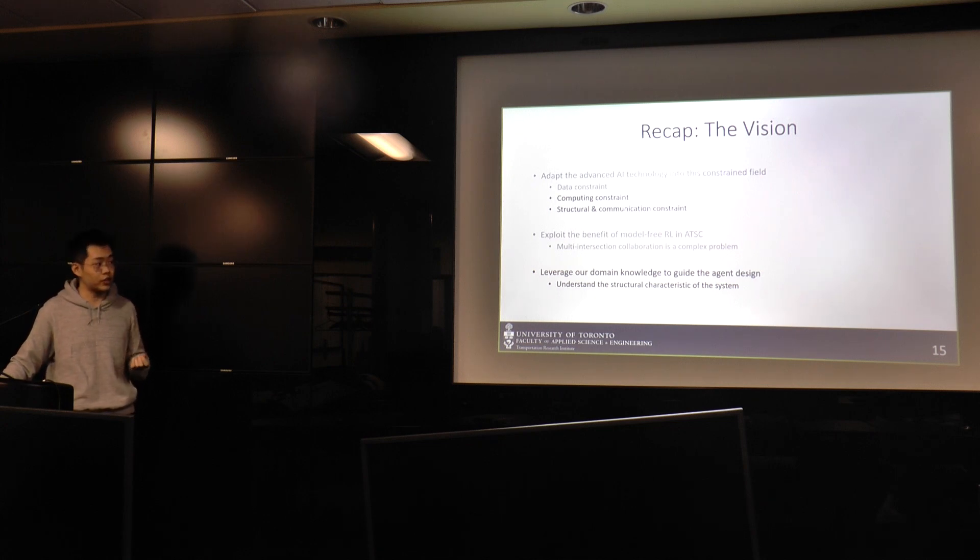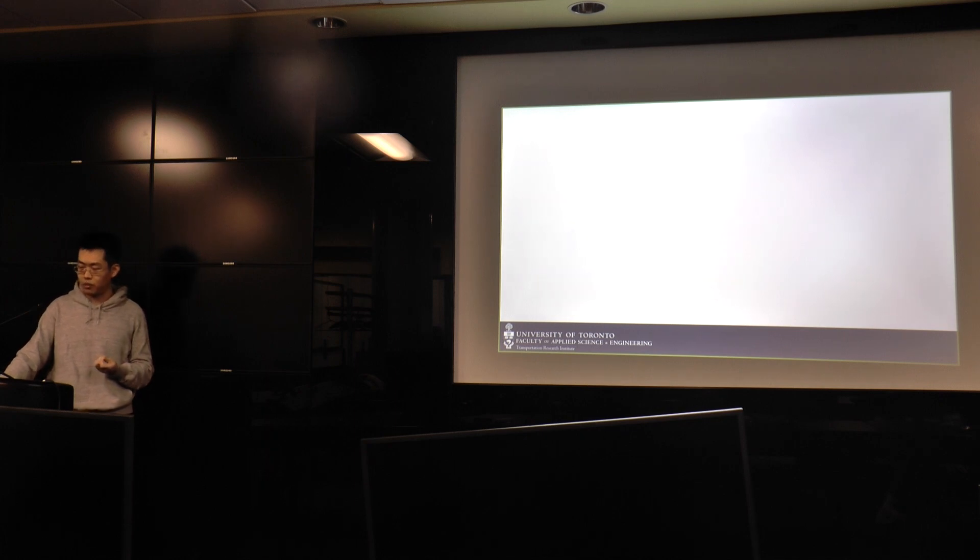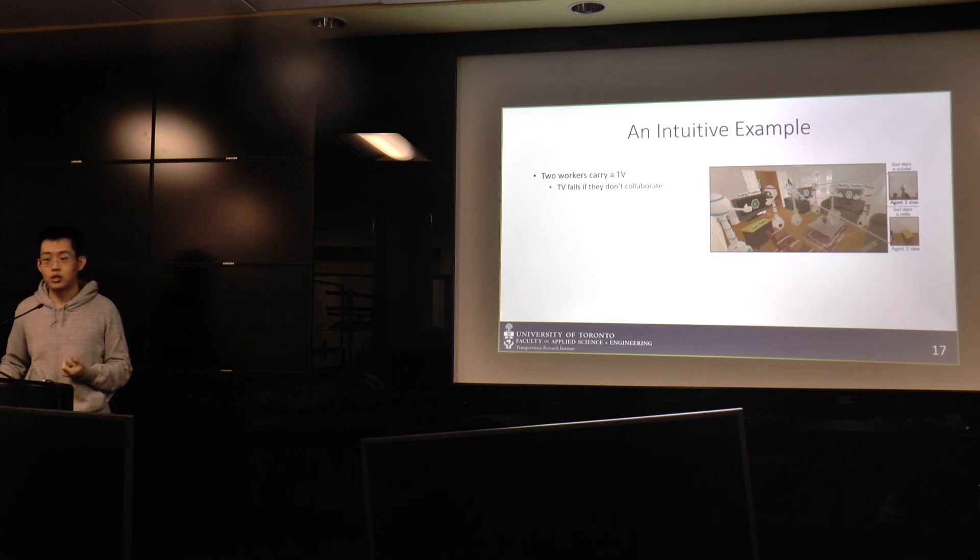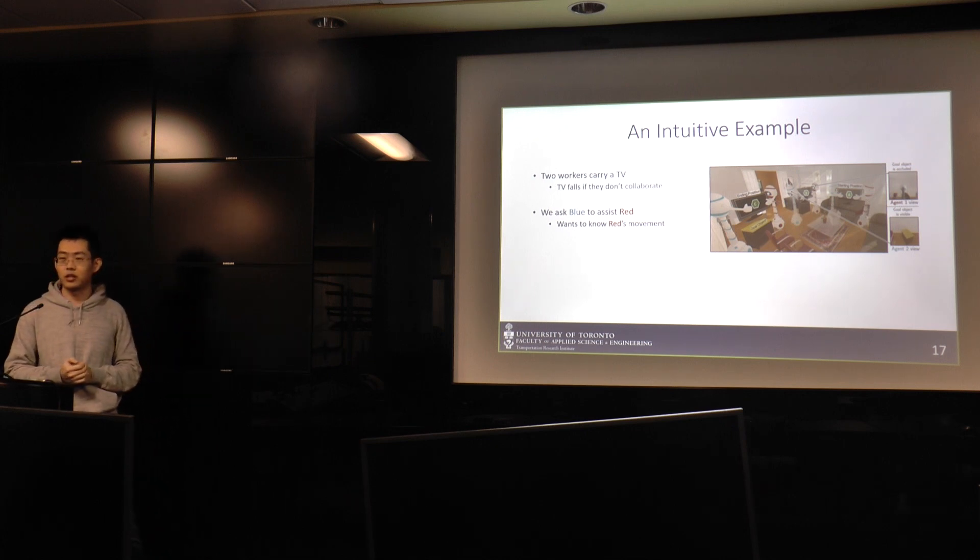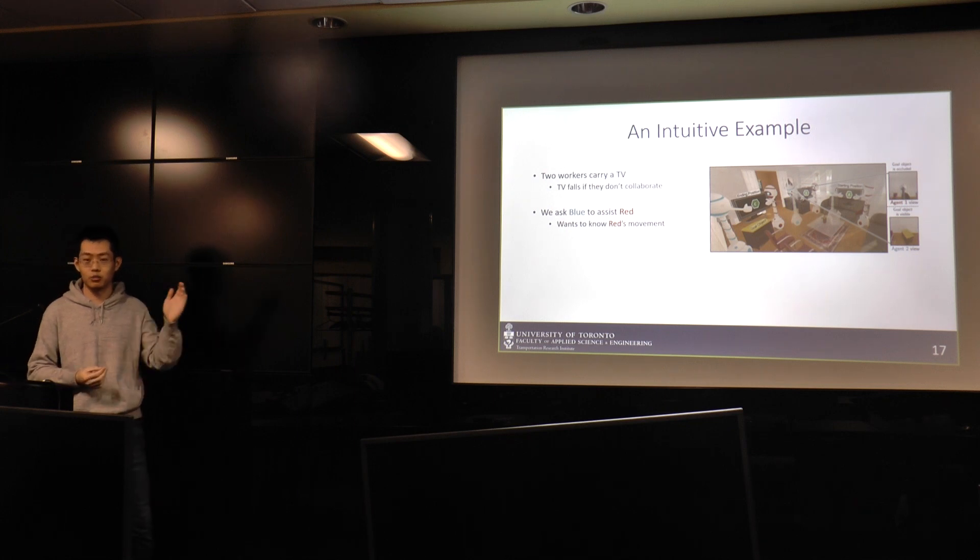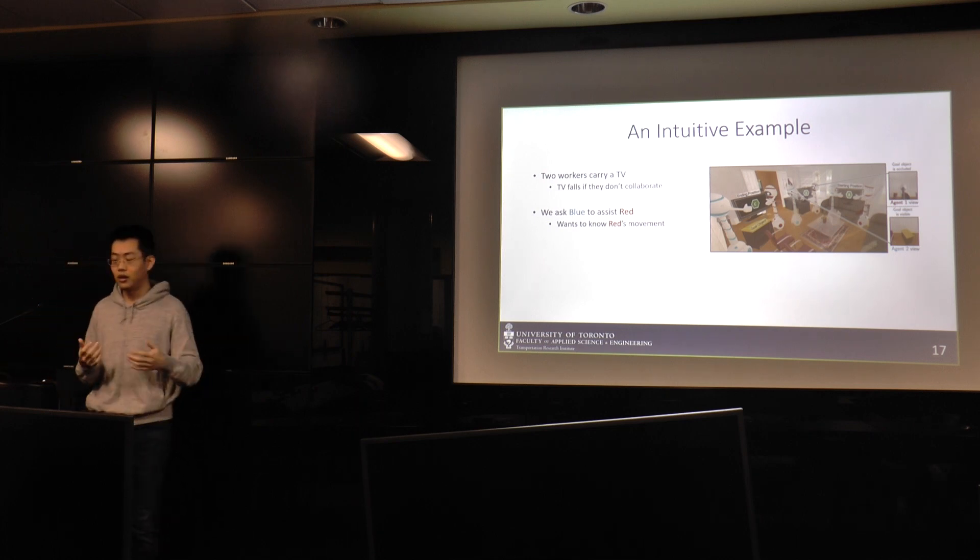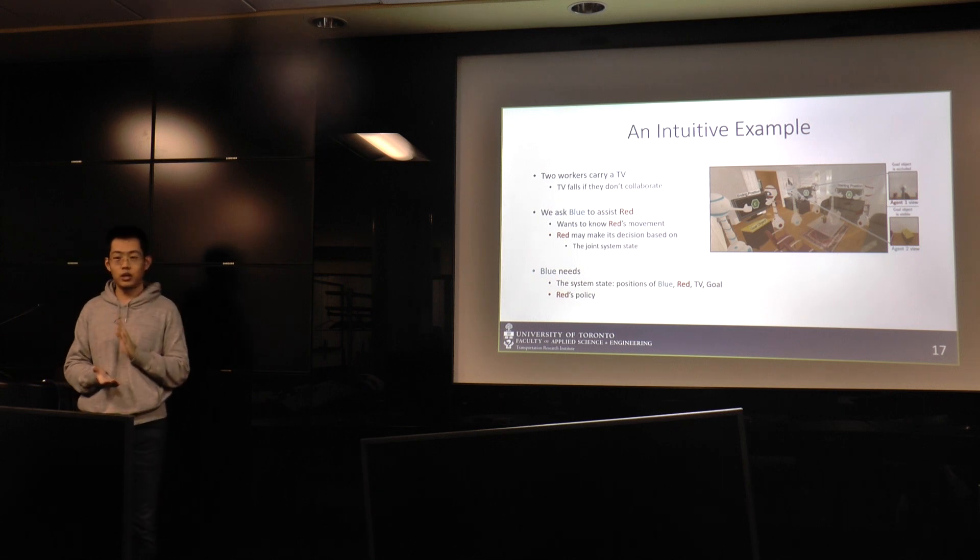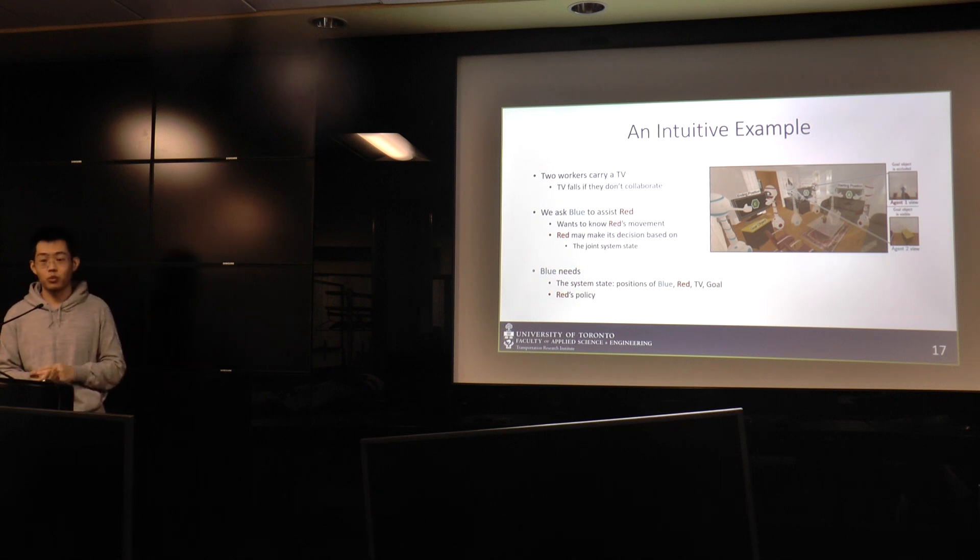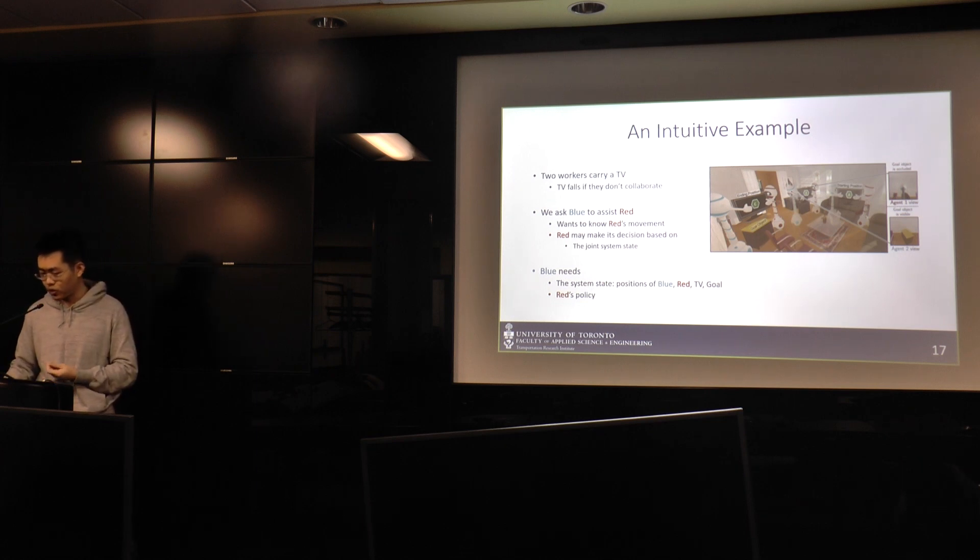So the system we've got to design is to coordinate agents, what we call traffic signal coordination. So let's start from an intuitive example. So now two agents want to collaborate to move the television from spot A to spot C. We want to ask the blue agent to assist the red agent. And imagine that the red agent is about to move in this direction. What should the blue agent do? It should know that the red agent is about to move to a specific direction to assist it, right? It can't move to the opposite direction. If it moves in an opposite way, the TV just falls. So the blue needs to know not only the state of its own, it also needs to know the state of the red, and where's the TV, where's the goal, and also what's the red policy.